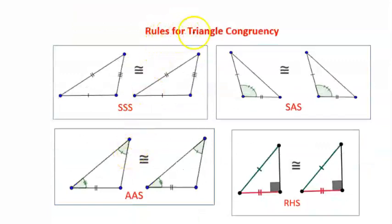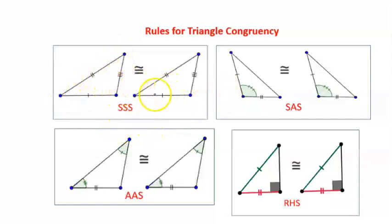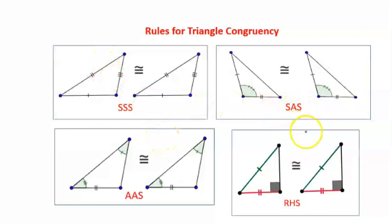Rules or cases for triangles to be congruent. The first case is SSS, which stands for side-side-side, so all the sides in one triangle must equal all the sides in the other triangle — three corresponding sides are equal in both triangles. The next case is side-angle-side, where we need to prove two corresponding sides and the angle between them are equal.